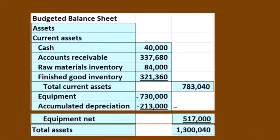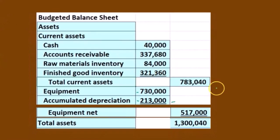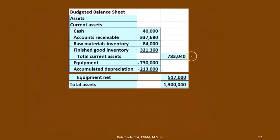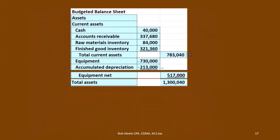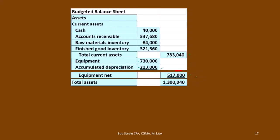Then we calculate the total assets. The outer column of current assets, $783,400, plus the $517,000 gives us total assets of $1,300,040.